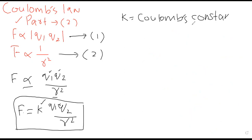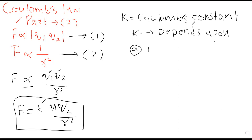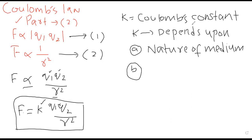What we call this constant is Coulomb's constant. The value of this Coulomb's constant depends upon two factors: first, the nature of the medium between charges — for example, placing charges in air versus water changes the force because the value of k changes। Second, k depends upon the system of units — ये दो चीज़ें हैं जिन पर k depend करता है।